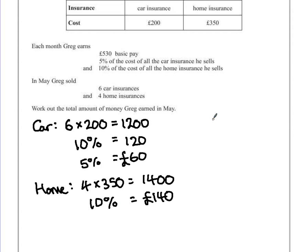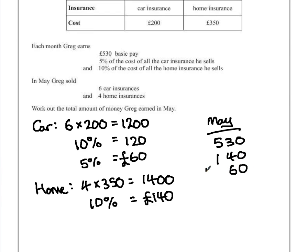So to find out how much money he earns in May, Greg will earn his £530 basic pay. He gets £140 from the home insurance and £60 from car insurance. By adding those three values together, we end up with £730. So he makes £730 in the month of May.